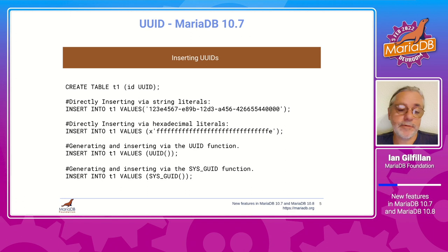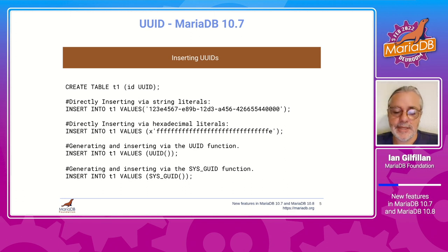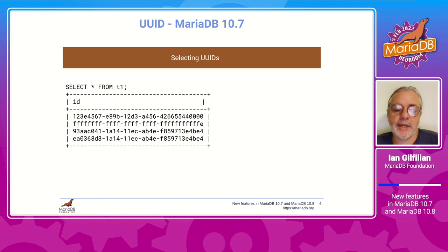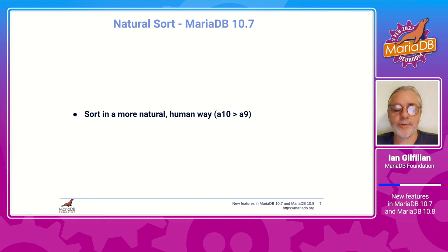Using the UUID data type is very simple — you create a table and define the field as UUID type. You can insert directly via string literal, via hex literal, using the UUID() function itself, or using the SYS_GUID() function. SYS_GUID() was introduced in 10.6 for Oracle compatibility and generates a UUID but without the dashes. When you return values you will always get the standard format with dashes included.